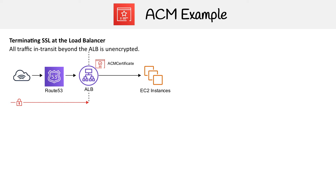For someone to take advantage of that, they'd have to break into your AWS account and be able to intercept that traffic, so it's a very low risk. ACM can only really be attached to Elastic Load Balancer, CloudFront, or API Gateway, so it's not easy to protect this internal traffic.